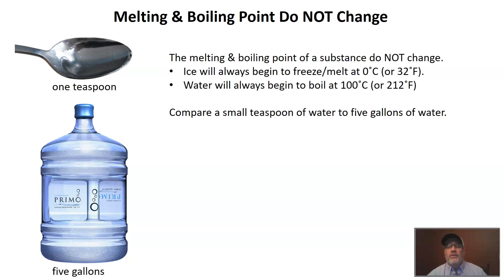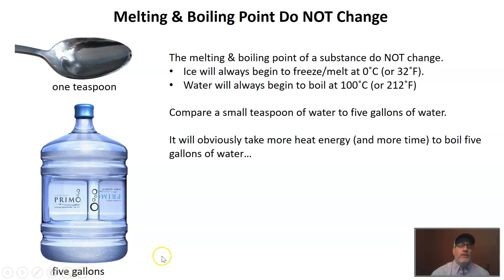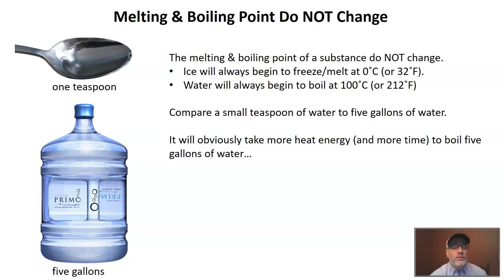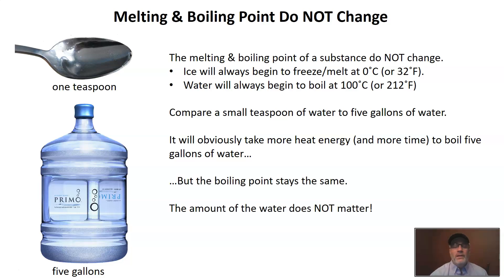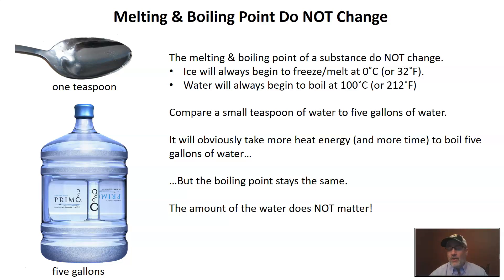Let's compare a small teaspoon of water to five gallons to understand this better. It is clearly going to take more heat energy and a lot longer time to get five gallons up to 212 degrees. But just because it takes longer does not mean we have changed the boiling point. The teaspoon will heat up quickly, but the boiling point itself stays the same — always 212 degrees Fahrenheit or 100 degrees Celsius. The amount of matter does not change the boiling point.